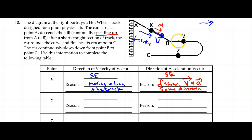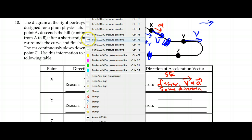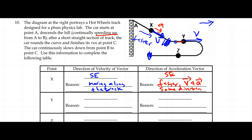At point Y, after a short straight section of track, the car rounds the curve and continuously slows down from point B to point C. Friction or some other force is causing it to slow down. So at Y, we look for the velocity vector — it's going to be pointed along the same direction as the track. Since we're slowing down, the acceleration vector has to be opposite to that. The longer the acceleration arrow is, the more the slowdown will be.